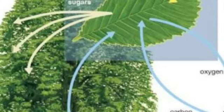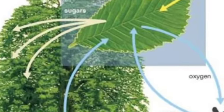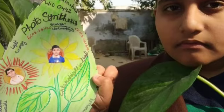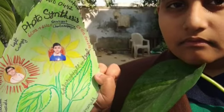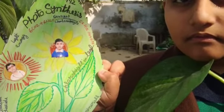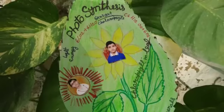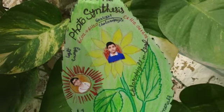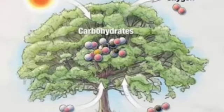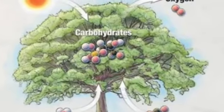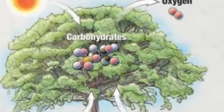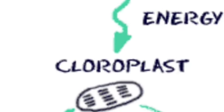carbon dioxide and minerals into oxygen and energy-rich organic compounds. The basic formula of photosynthesis is 6-CeO2 and 6-H2O, reacting in the presence of sunlight and chlorophyll.